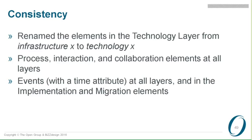We added some concepts to create more symmetry between the layers. At the business layer we have business process, business interaction, and business collaboration. At the application layer we used to have application function, application components, and application interaction, but we didn't have a process concept — so we now added an application process concept that helps you express things like orchestration processes. At the technology layer we didn't have a process, interaction, or collaboration, so those were added as well. Now you have the same set of behavior and collaboration concepts across all three layers.